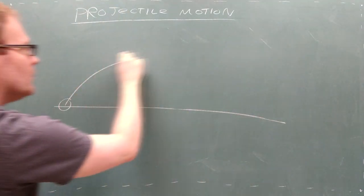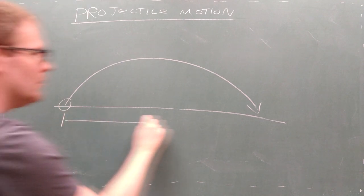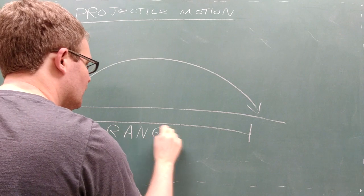When we launch a projectile, we'll be interested in a few quantities. First, we might look at the range of the trajectory. The range is the total horizontal distance from beginning to end.